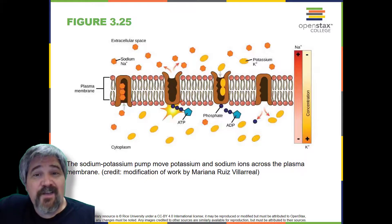Active transport maintains concentrations of ions and other substances needed by living cells in the face of these passive changes. Much of a cell's supply of metabolic energy may be spent maintaining these processes. Because active transport mechanisms depend on cellular metabolism for energy, they are sensitive to many metabolic poisons that interfere with the supply of ATP.